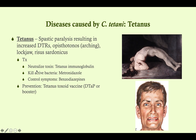The treatment for tetanus is, first, to neutralize the toxin — that's most important because antibiotics won't address toxin already present. We give an immunoglobulin to deactivate the toxin and allow it to be cleared. Then we kill whatever active bacteria is in the system using metronidazole. To control symptoms — the spasticity — we give benzodiazepines, plus any supportive care needed to keep the patient alive. To prevent tetanus, we give a vaccine: in childhood the DTaP vaccine containing the tetanus toxoid, and then a booster every 10 years.